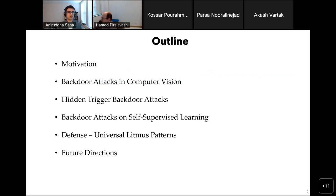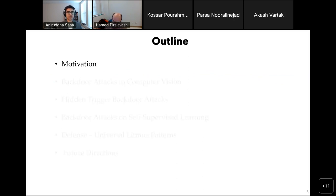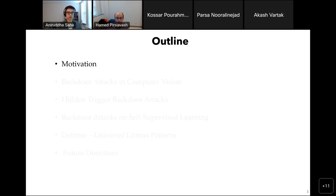I'll pause after each section to take questions, but at any point if you think I'm going too fast, please feel free to stop me. The goal of my research is to identify adversarial vulnerabilities in machine learning models, and a big motivation is to build algorithms to make models robust and secure. Deep neural networks have become the standard building block in numerous machine learning applications, including computer vision, natural language processing, speech recognition, recommendation systems, and robotics, achieving state-of-the-art performance on complex tasks.